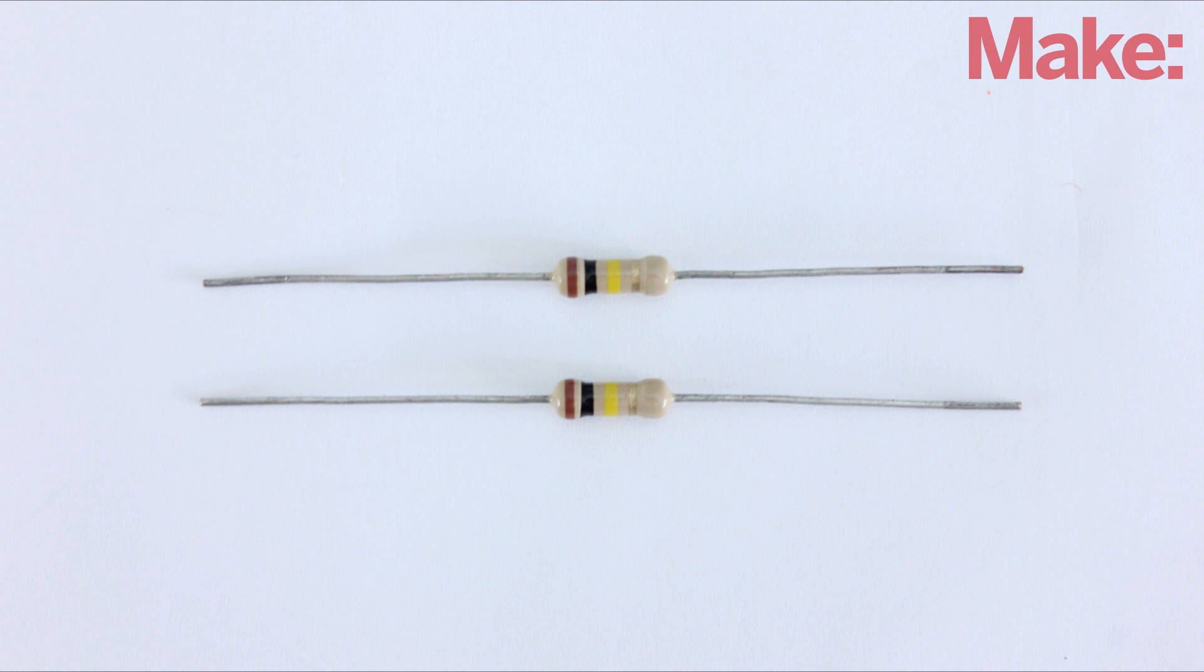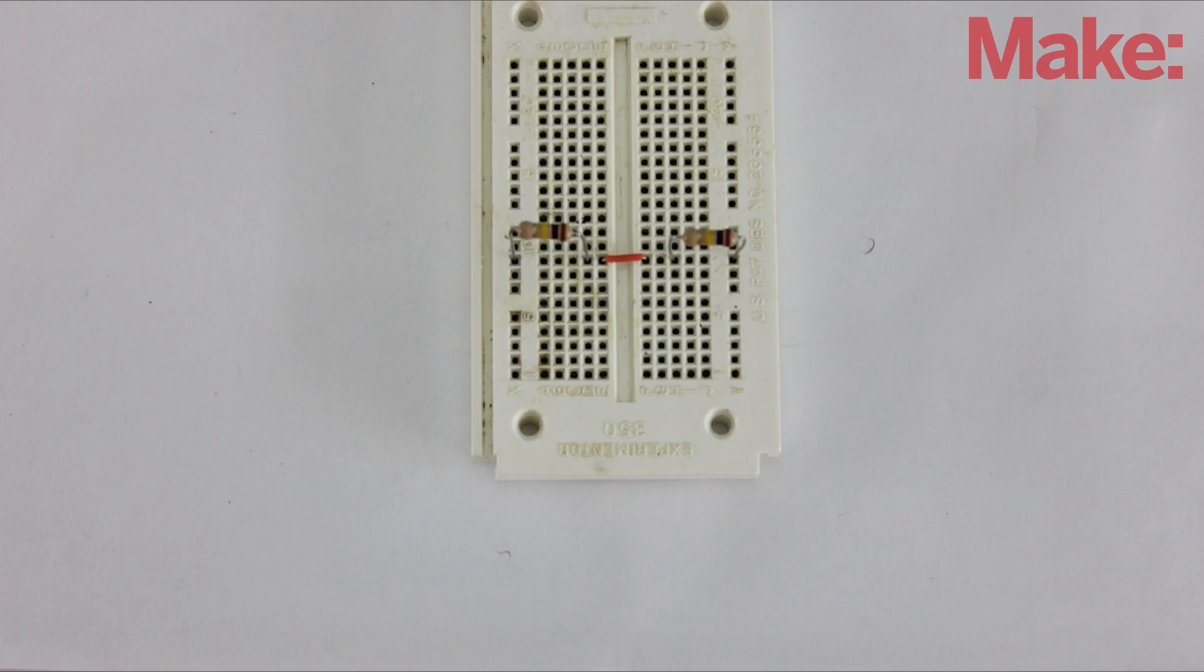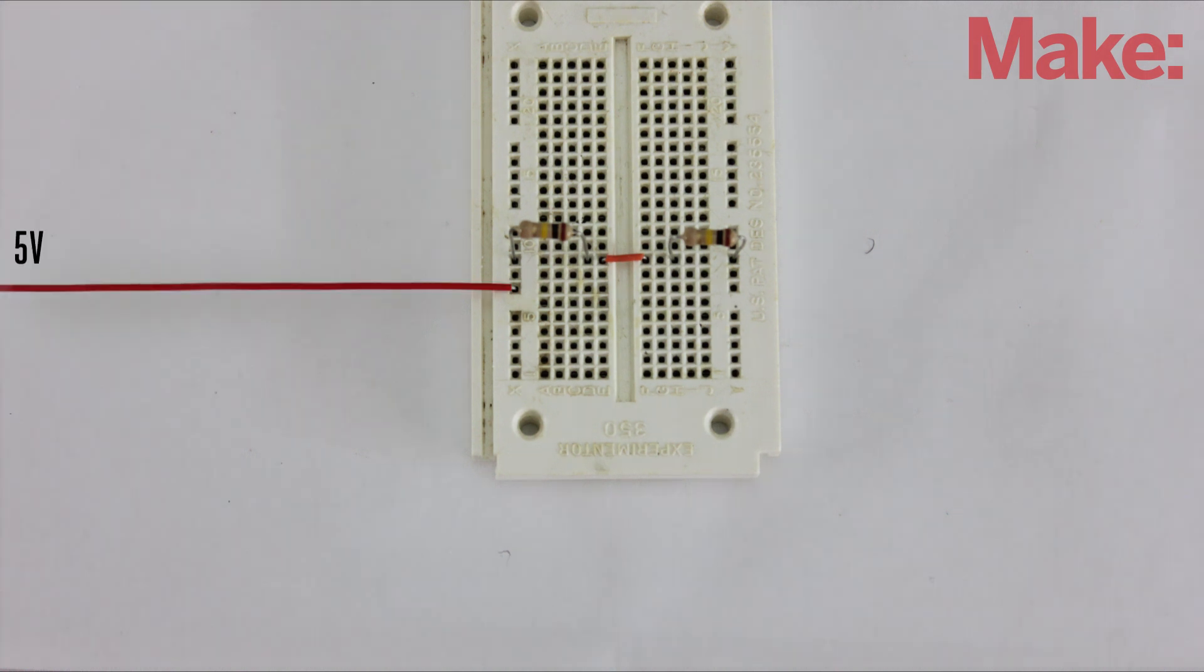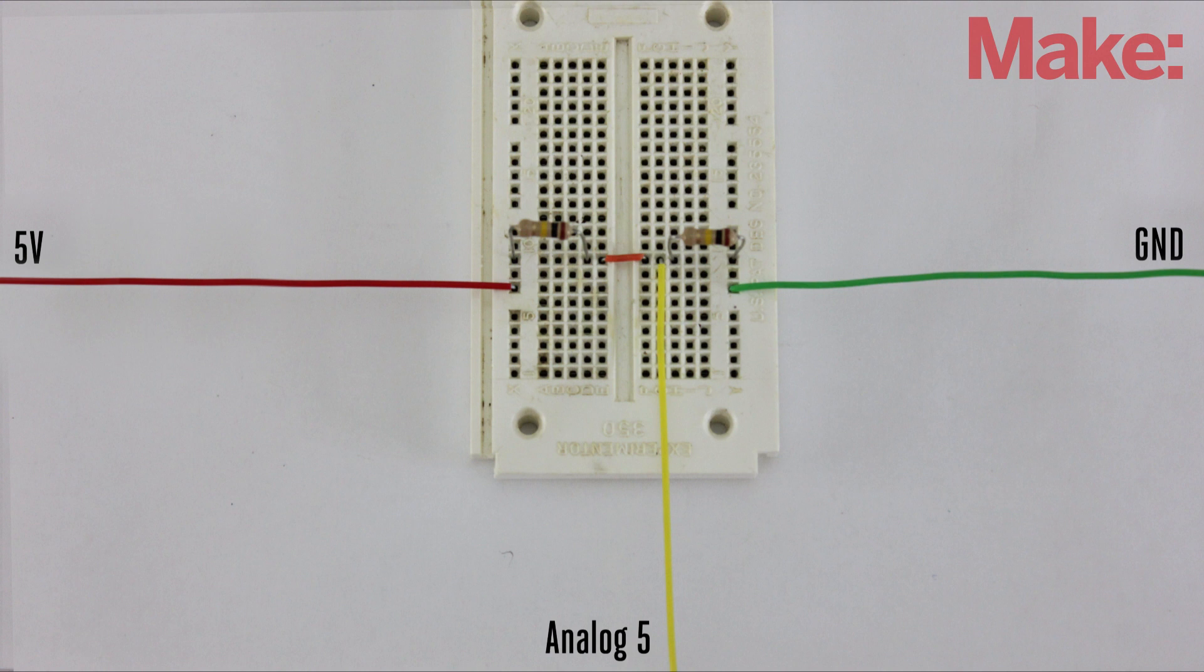The last parts to connect are the resistors. The two resistors are wired in series to form a voltage divider. One end is connected to 5 volts and the other end is connected to ground. The center connection between them is connected to analog pin 5.